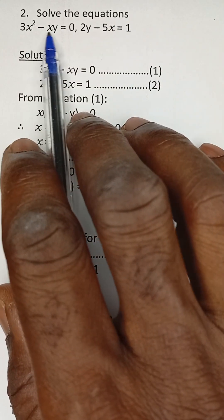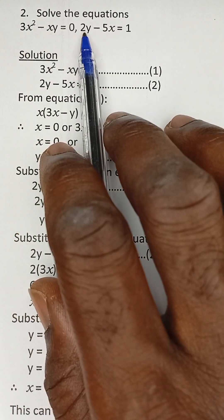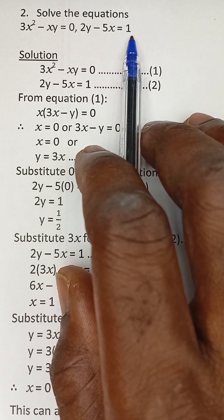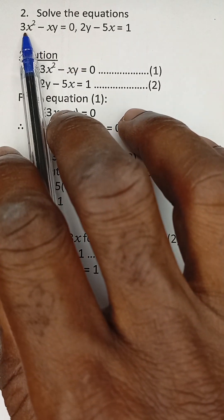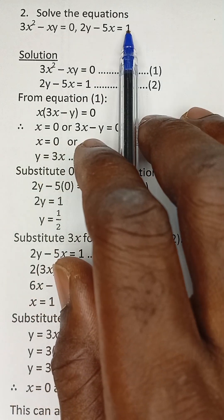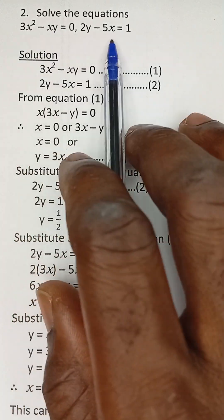Solve the equation 3x² - xy = 0 and 2y - 5x = 1. This is a simultaneous linear and quadratic equation. This is the linear equation and this is the quadratic equation. It is a simultaneous equation.